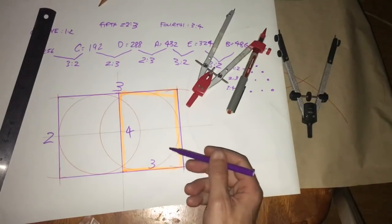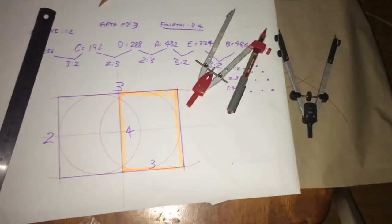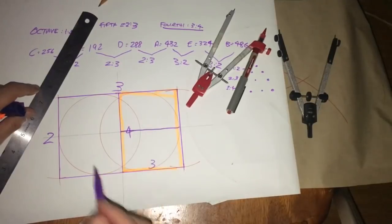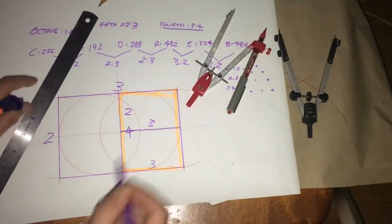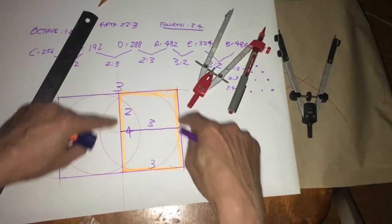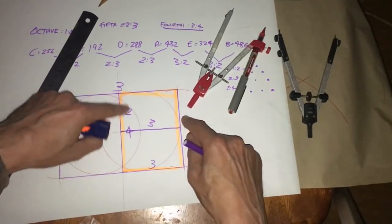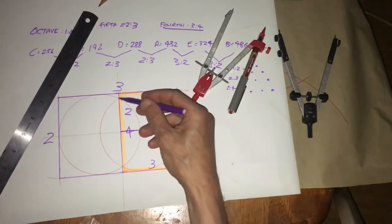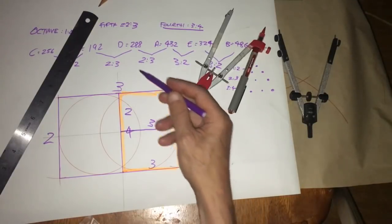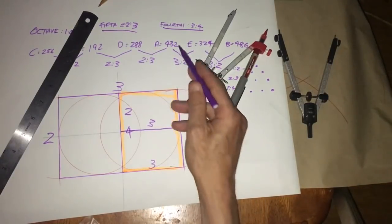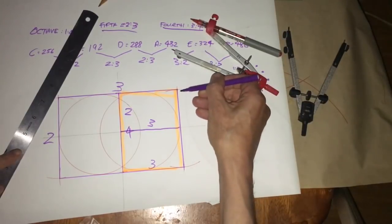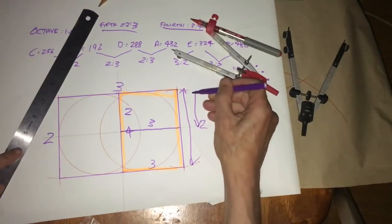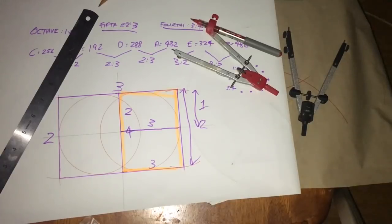So this rectangle now has a ratio of four to three. That's now a four to three ratio. So we have the perfect fourth. This rectangle in here also has a two to three ratio. So the orange highlighted one is a four to three, and then half of that is a two to three. So you have two to three for fifth, and we also have four to three for fourth.